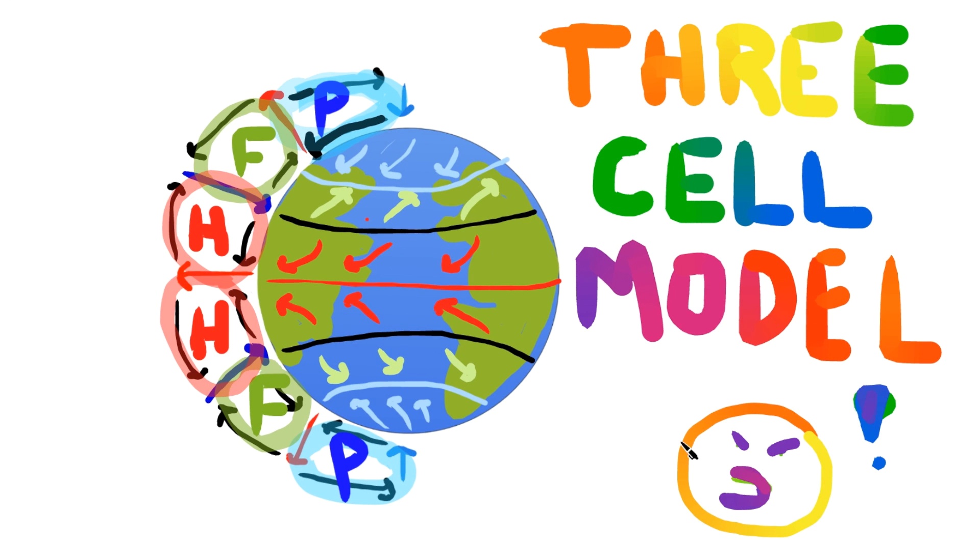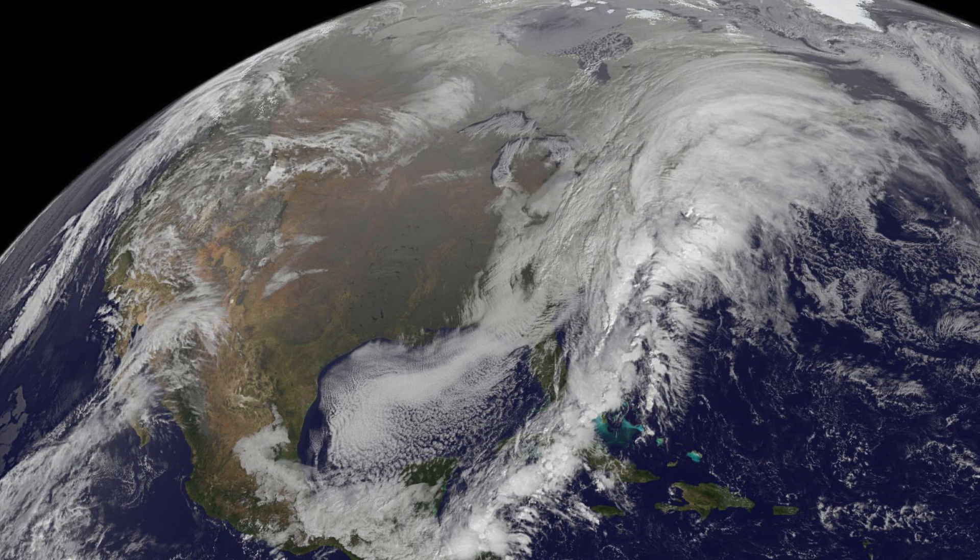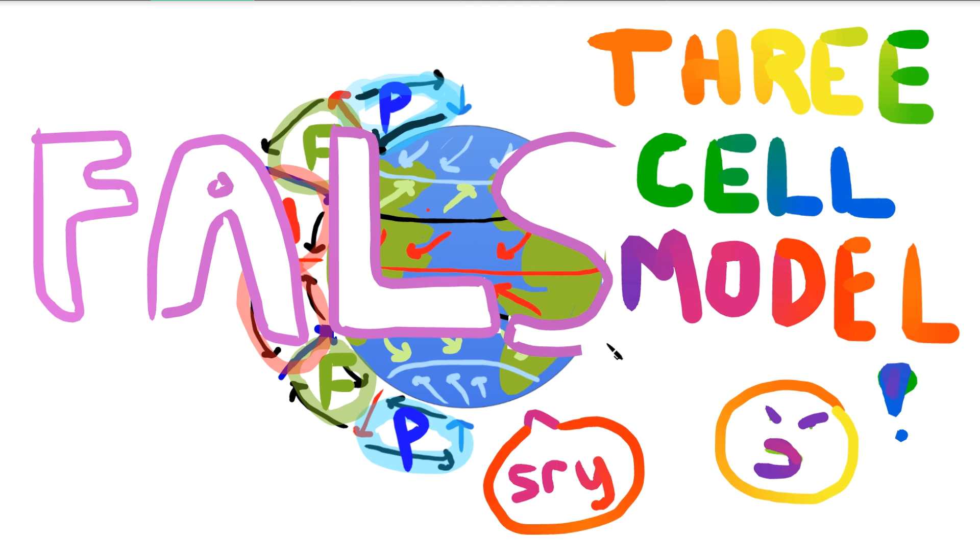While it may seem complex, what is shown here is most certainly not the full picture. There are all the small-scale convection currents I mentioned, and there are tons of storm systems and high and low pressure areas that mess up and contradict this model all the time. Nevertheless, it explains a lot.